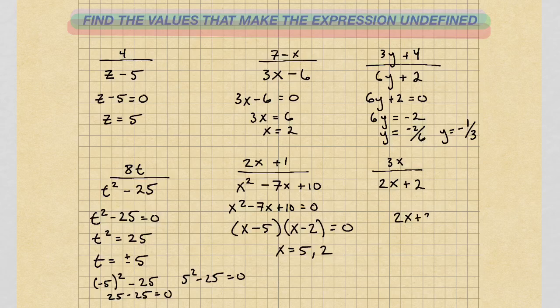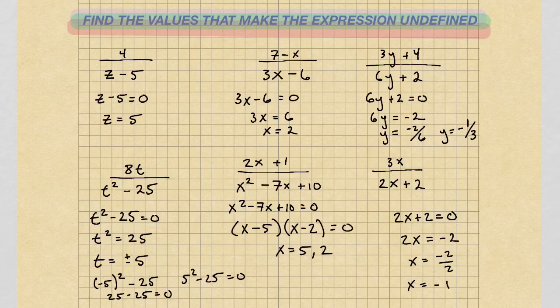The last one: we have 2x plus 2 equals 0. So 2x equals negative 2, x equals negative 2 over 2, which means x equals negative 1. So if I plug in the value of negative 1, this denominator is going to go to 0, leaving it undefined. Just keep in mind why you can't have a 0 in the denominator — it goes back to your arithmetic rules. There is no value that makes that true; all those are undefined.